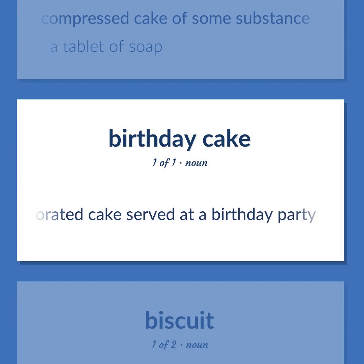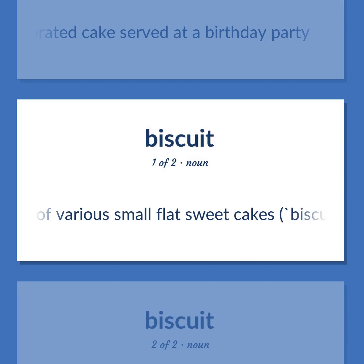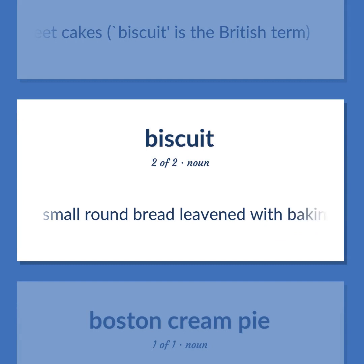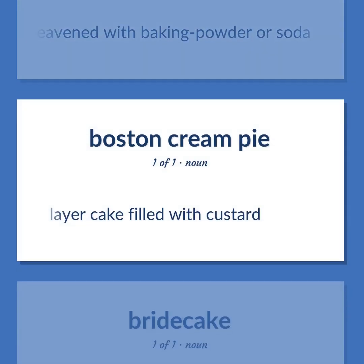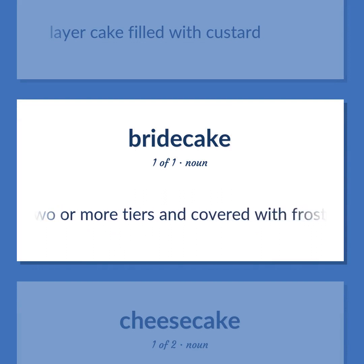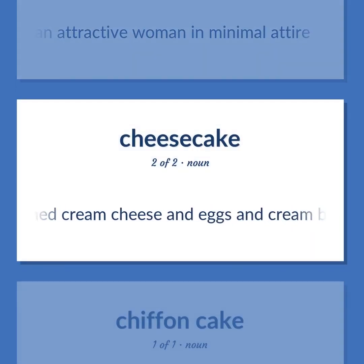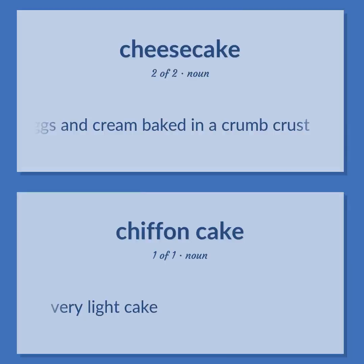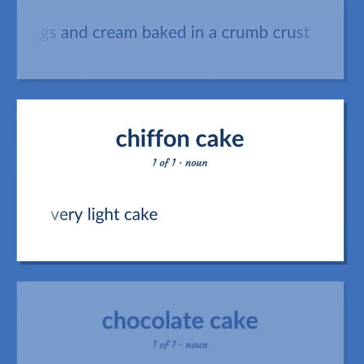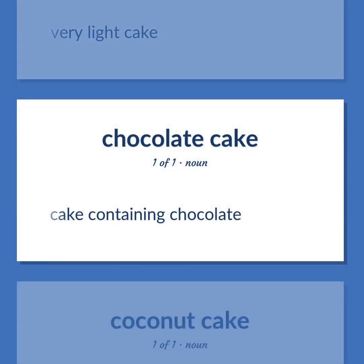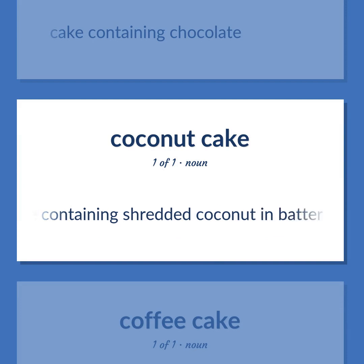Decorated cake served at a birthday party. Any of various small flat sweet cakes; biscuit is the British term. Small round bread leavened with baking powder or soda. Layer cake filled with custard. A rich cake with two or more tiers and covered with frosting and decorations, served at a wedding reception. A photograph of an attractive woman in minimal attire. Made with sweetened cream cheese and eggs and cream baked in a crumb crust. Very light cake. Cake containing chocolate. Cake containing shredded coconut in batter and frosting.